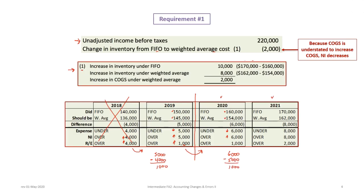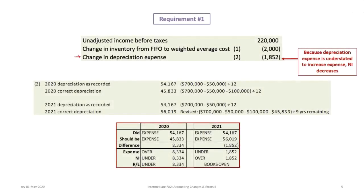In 2021, inventory errors self-correct over two years so 2019 is gone. Inventory reported under FIFO is $170,000; it would be $162,000 under weighted average, a difference of $8,000. The inventory is overstated, the expense understated, meaning net income and retained earnings are overstated by $2,000 — because we're only concerned about the two current years: $8,000 in 2021 minus $6,000 in 2020 gives a difference of $2,000. You do not need to look at any years prior to the current and previous year.